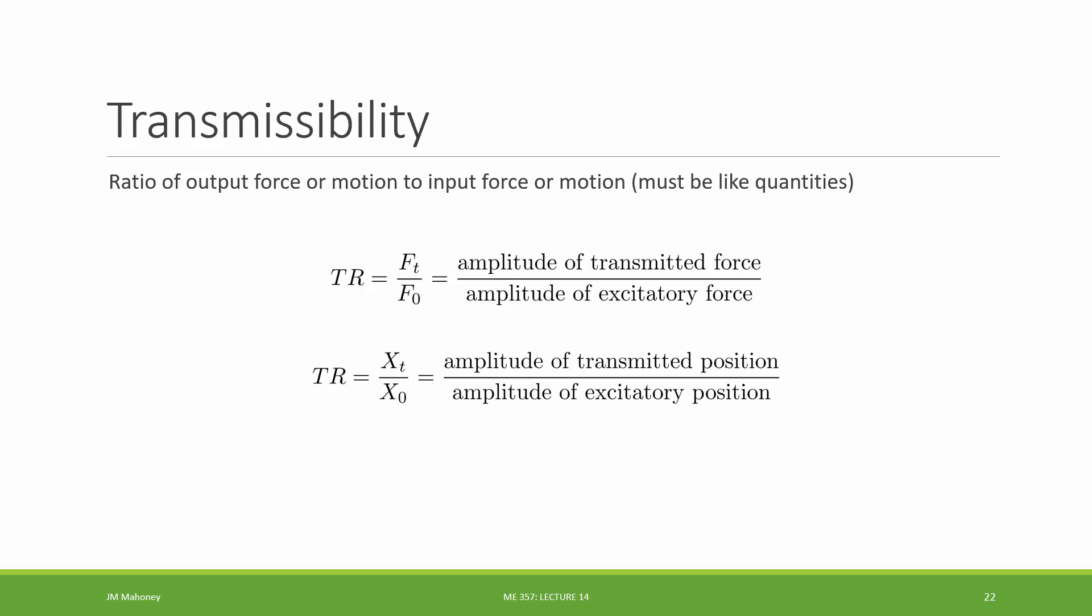And it's really nothing new—it's just a specific transfer function that we find where the output and the input are like quantities. For example, we could see the output force, or what we call the transmitted force, versus our input force, or what we call the excitatory force. Also, we could do position versus position: if we have a prescribed input position X₀, we can have an output position, or what we call the transmitted position.